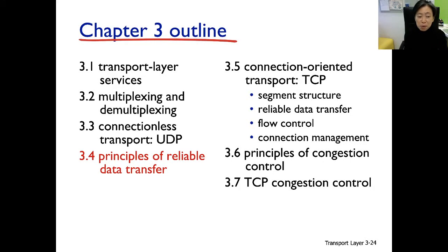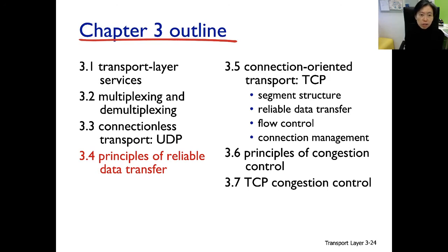All right, 3.4 — principles of reliable data transfer. You might notice Polly is a little more alert talking about this section because this is going to be the most challenging section in Chapter 3, and arguably one of the most challenging sections in the entire textbook.